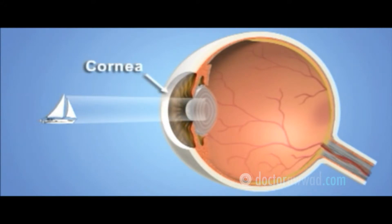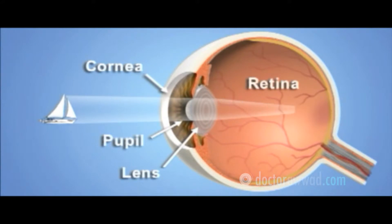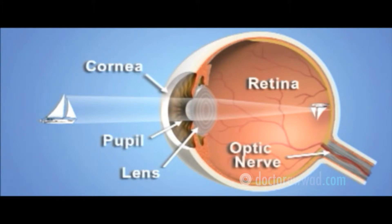Light rays enter the eye through the clear cornea, then through the pupil and the lens. These light rays are focused onto the retina, a light-sensitive tissue lining the back of the eye. Signals from the retina are sent through the optic nerve to the brain, where they are interpreted as the images we see.